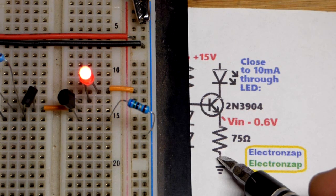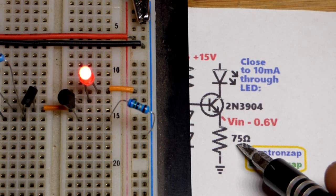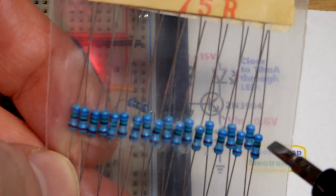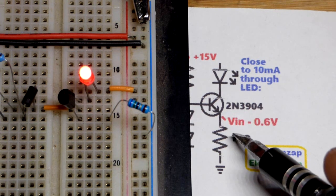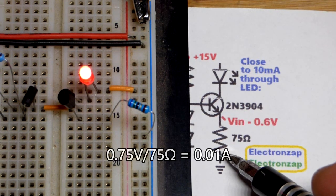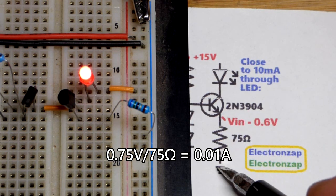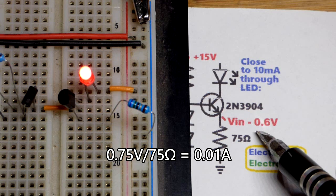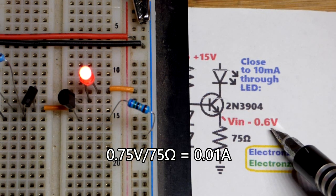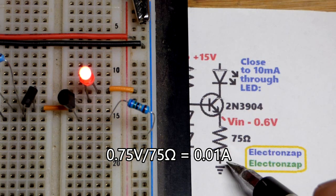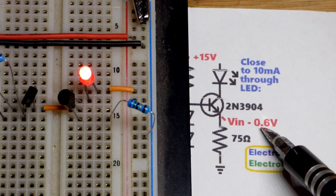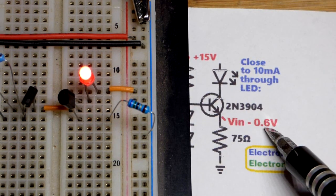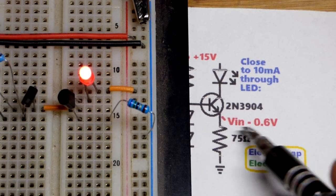The resistor here at the emitter, what that does is it builds up a voltage at the emitter that's about 0.6 volts less than at the base. It's not exact. That's one reason why we had a different current flowing through at different voltages. But it's somewhat reliable there, about 0.6 volts less than what we have at the base. That goes across the resistor. I picked a 75-ohm resistor, and it's actually the first 75-ohm resistor I used out of this pack.